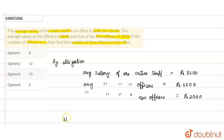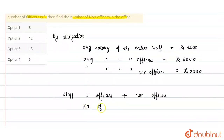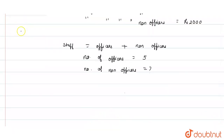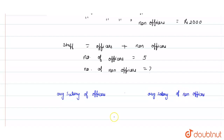So who is the staff? Staff includes officers plus non-officers. The number of officers is 5 and we have to find out the number of non-officers. We will apply the allegation here: on one side is the average salary of the officers, on the other side is the average salary of non-officers, and in the middle is the average salary of the entire staff.